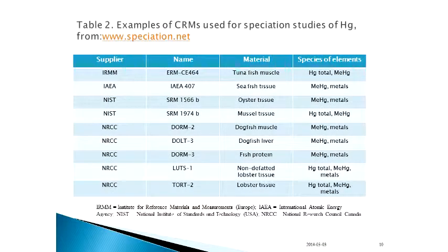Here there are some examples, also from that page, in which we have a supplier — for example, this European Institute for Reference and Materials and Measurements, also International Atomic Energy. In this case, most of them are from Canada — National Research Council Canada — and from the American National Institute of Standards and Technology.